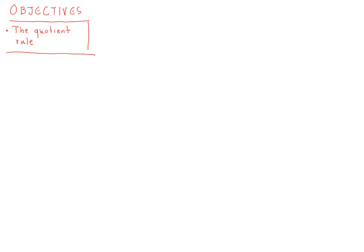We're going to give the quotient rule now. Before we do so, let's recall the product rule that we gave in the last lecture, which tells us that if we have the product of two functions, then the derivative is the derivative of the first times the second plus the first times the derivative of the second. It turns out that the quotient rule is quite closely linked to the product rule.